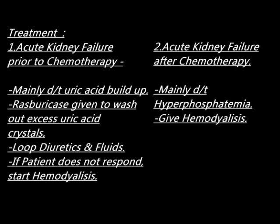Treatment mainly depends on whether acute kidney failure occurred prior to or after chemotherapy. If it occurred prior to chemotherapy, uric acid is mainly washed out using rasburicase and loop diuretics, and fluids are given. If the patient does not respond, hemodialysis is the only remaining option. If acute kidney failure occurs after chemotherapy, it is mainly due to hyperphosphatemia, and hemodialysis is the definitive treatment.